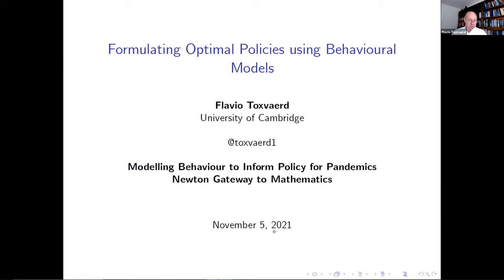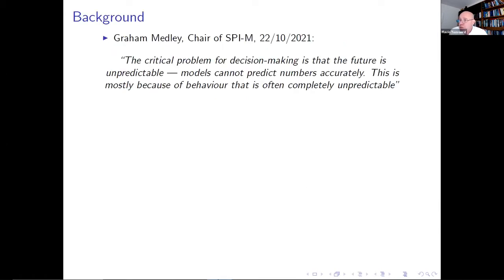Let me first set the stage with a quote. This is from two weeks ago, a quote by Graham Medley, chair of SPI-M, who says: 'The critical problem for decision making is that the future is unpredictable. Models cannot predict numbers accurately, and this is mostly because of behavior that is often completely unpredictable.' Of course, many people will take issue with behavior being completely unpredictable. We do think we know a little bit about what people's motivations are, even though we might not be able to perfectly predict it.